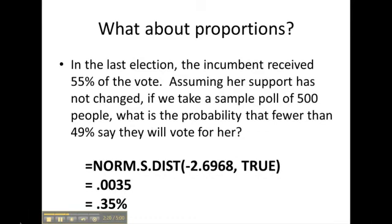So given this situation, it is highly unlikely that fewer than 49% say they will vote for her. So if you did a poll of 500 people, and fewer than 49% said they would vote for her, then it's very, very likely that your original assumption that she still had 55% of the vote is incorrect because it's highly unlikely that you would get this result. It's actually less than 1%. It's about a third of a percent. So that's how we would interpret it.